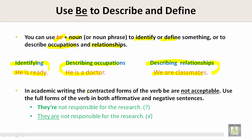In academic writing, the contracted forms of the verb be are not acceptable. Use the full forms of the verb in both affirmative and negative sentences. For example, 'they're not responsible for the research' is unacceptable. An acceptable version would be: 'they are not responsible for the research.' Here, 'they are' is the full form of the verb be.